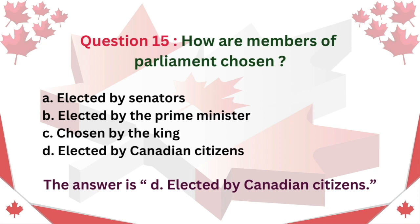Question 15. How are members of parliament chosen? A. Elected by senators B. Elected by the Prime Minister C. Chosen by the King D. Elected by Canadian citizens. The answer is D. Elected by Canadian citizens.